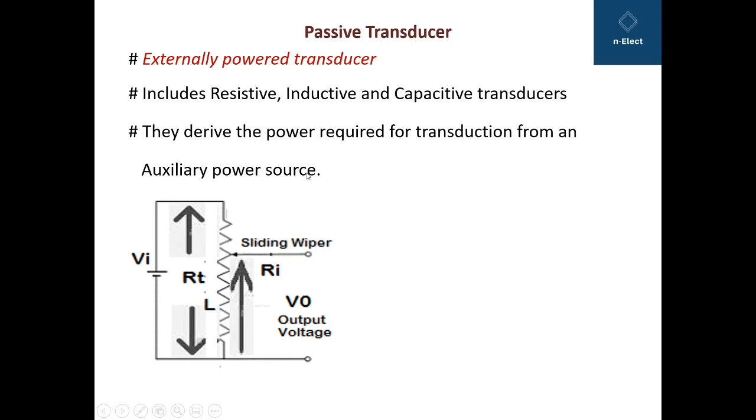As you can see in the figure, this is actually a rheostat or pot, but more correctly it's a rheostat because here the sliding wiper moves in a linear way. VI is the input voltage which is applied across the fixed terminals of the resistance or potentiometer resistance having a total resistance of RT and total length equal to L.